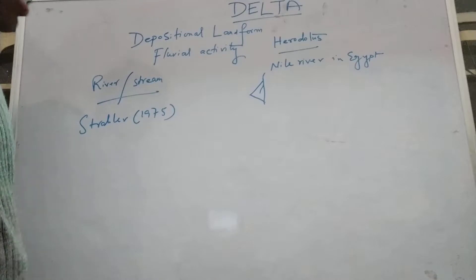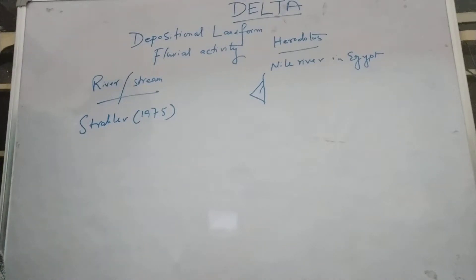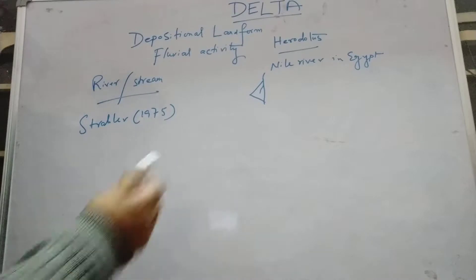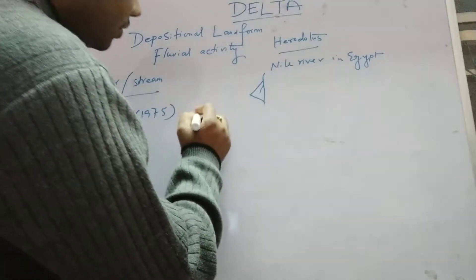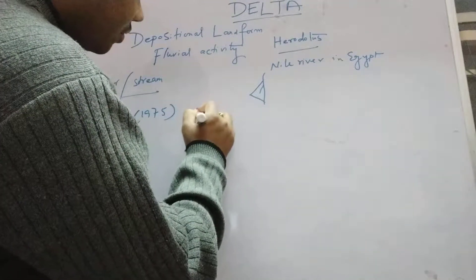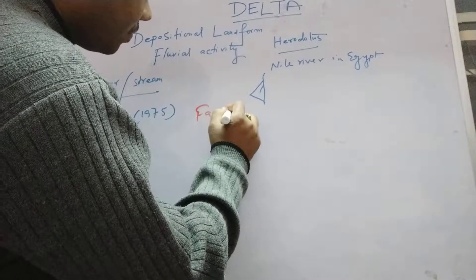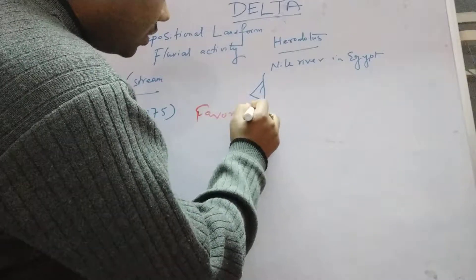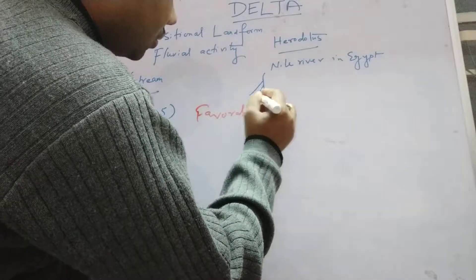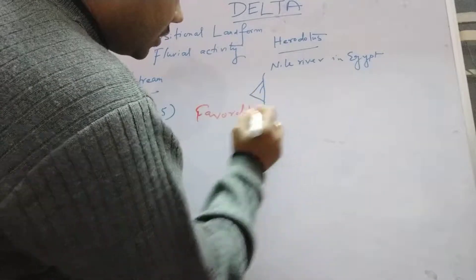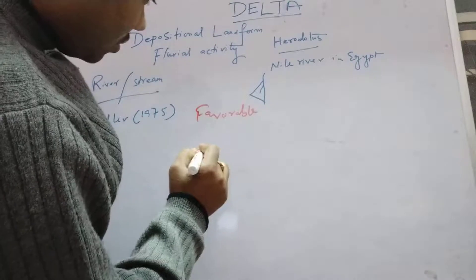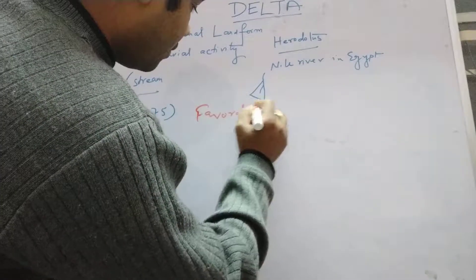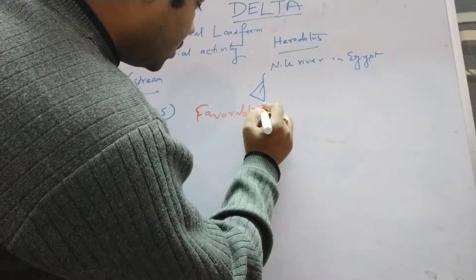There are some important favorable conditions which are required to develop a delta. Not all rivers in the world form a delta, but most rivers do form a delta.